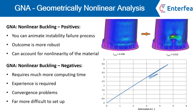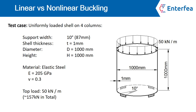Now let's look at a simple example to compare the outcomes from both analyses. I've chosen a simply compressed shell supported on four sectional supports — for instance, columns. All dimensions and required information are given. Note that we are using elastic steel. If I assumed that yielding had any impact on stability failure, this wouldn't be a fair competition, because linear buckling cannot take yielding into account at all. Here, I use elastic steel, assuming that yielding is not taken into account in either linear or non-linear analysis.